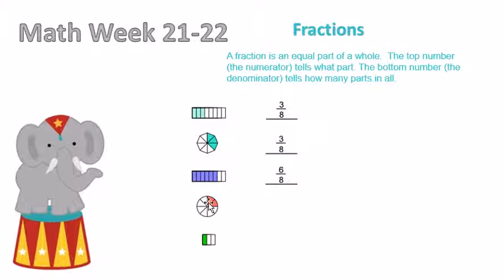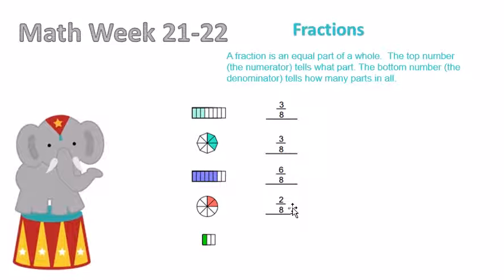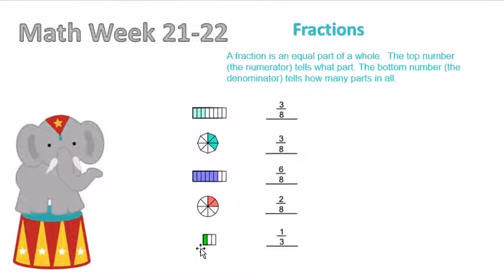Here we have one, two, three, four, five, six, seven, eight in all, and two shaded in — that gives us two eighths. Then we have one, two, three parts and only one shaded in, which gives us one third.